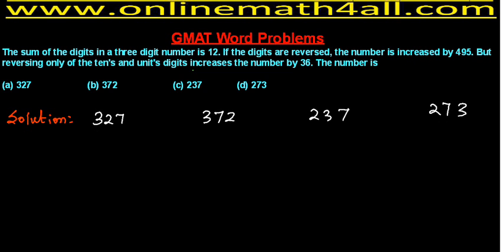Now I have to check whether the second condition is satisfied. To check it, we reverse the digits in each option. When reversed: option A (327) → 723, option B (372) → 273, option C (237) → 732, option D (273) → 372. So we have the reversed new numbers for all four options.